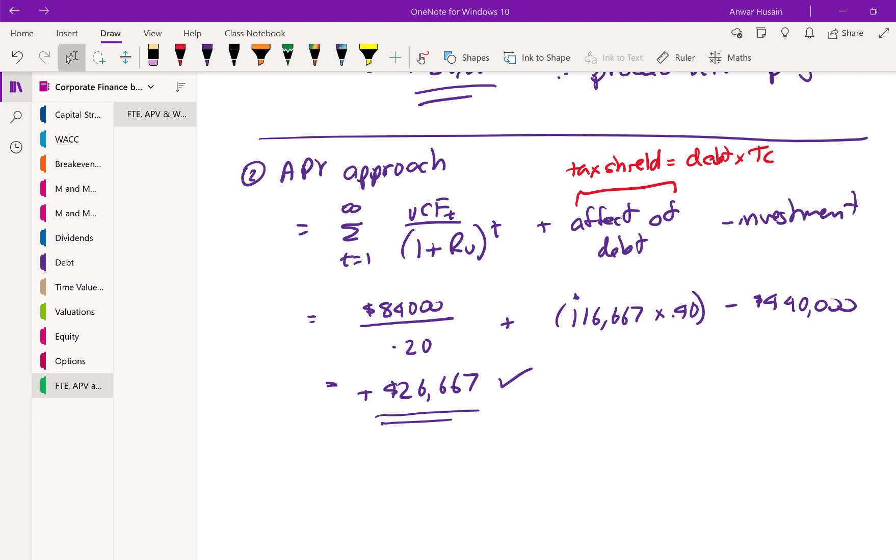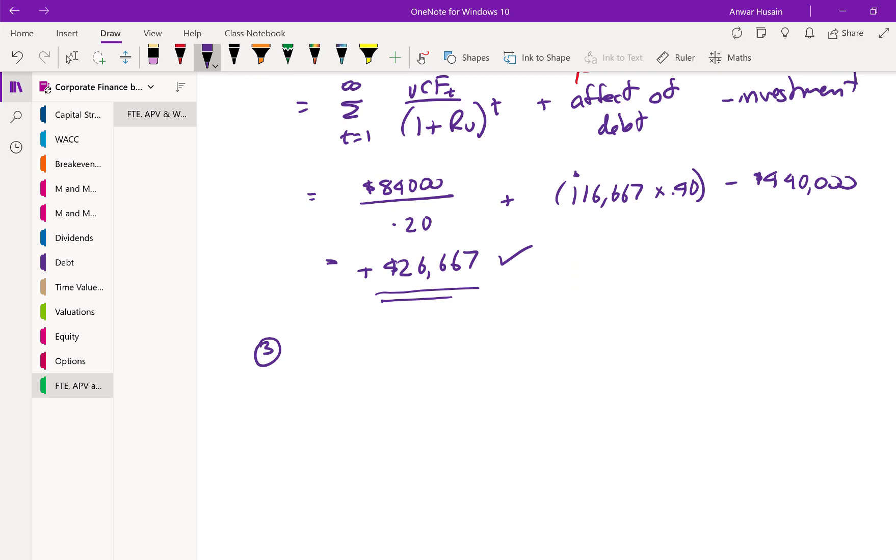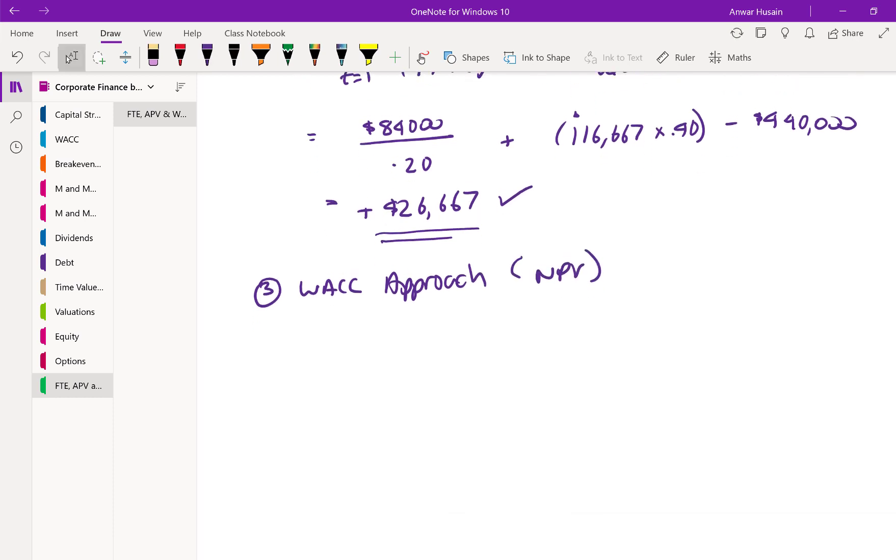What about the weighted average cost of capital approach, which is essentially the NPV approach. So again, we should get the same answer if done right. So first we need to calculate our weighted average cost of capital because we don't have that right now. I will calculate that using the formula as follows. So equity over the value of the firm times the cost of equity plus debt over the value of the firm times the cost of debt times one minus the tax rate.